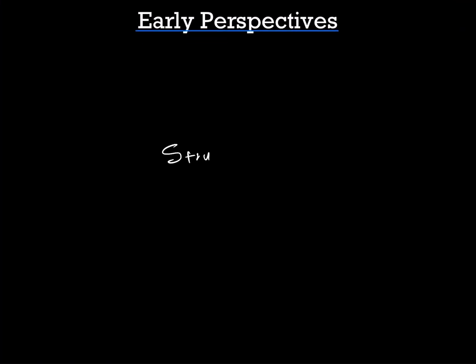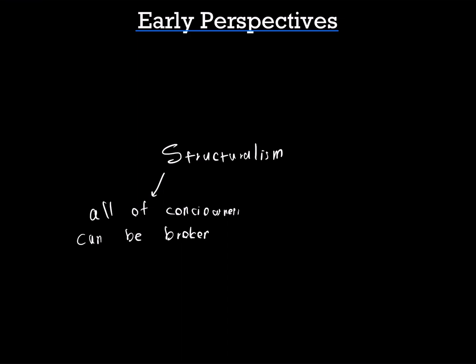In this video, we're going to talk about the early perspectives of the field of psychology. The first one that you need to know about is called structuralism. This is the earliest perspective. The theory of structuralism is that all of consciousness can be broken down into specific parts or structures which can be studied.